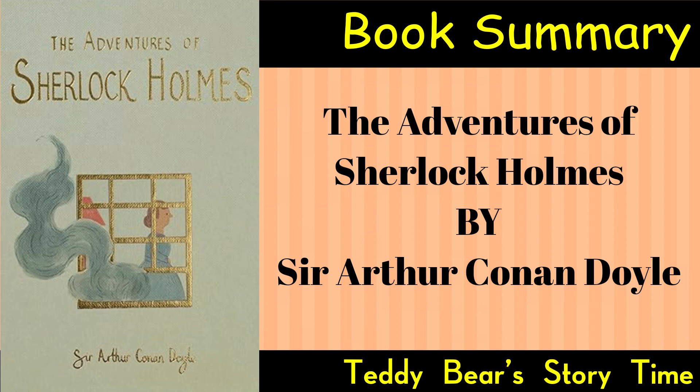A Case of Identity: Holmes assists a young woman, Mary Sutherland, who suspects her fiancé has disappeared under suspicious circumstances. The Boscombe Valley Mystery: Holmes is called upon to solve a murder case involving a dispute between neighbors in the countryside. The Five Orange Pips: Holmes investigates a series of deaths linked to a sinister organization known as the Ku Klux Klan. The Man with the Twisted Lip: Holmes solves the mystery of a missing man who is discovered to be living a double life as a beggar.